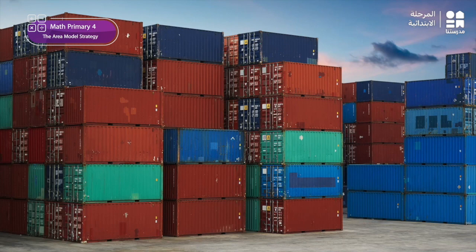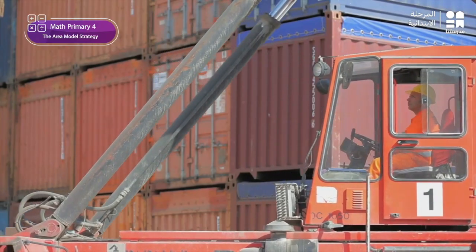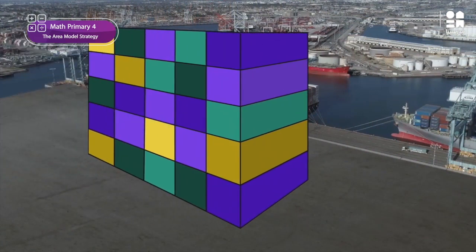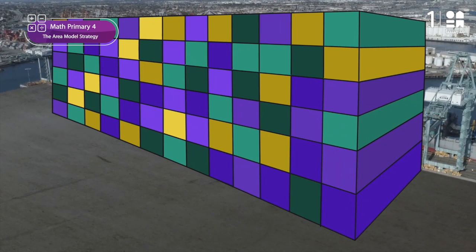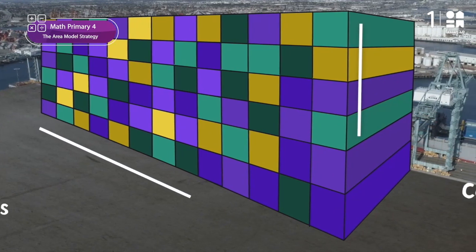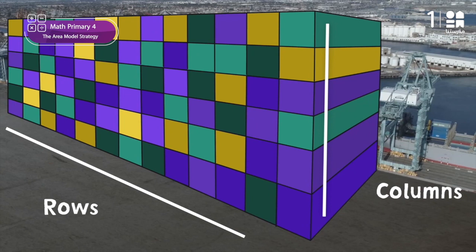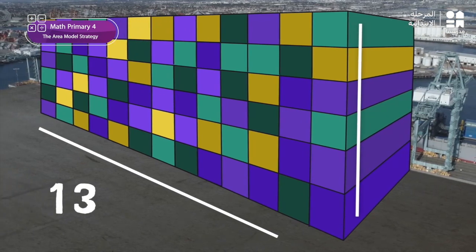A ship has brought these containers. The workers put them into columns of five, so it's easier to count. How many containers do you see here? Count the containers in rows and columns to help you. There are 13 containers in the bottom row and six rows. That should help.